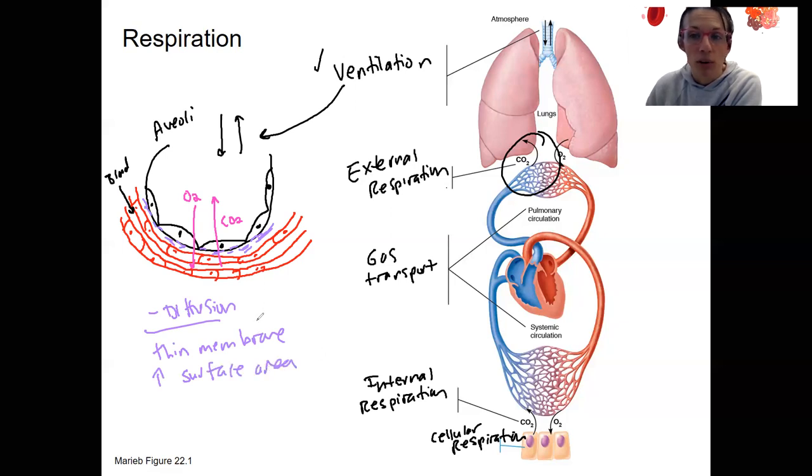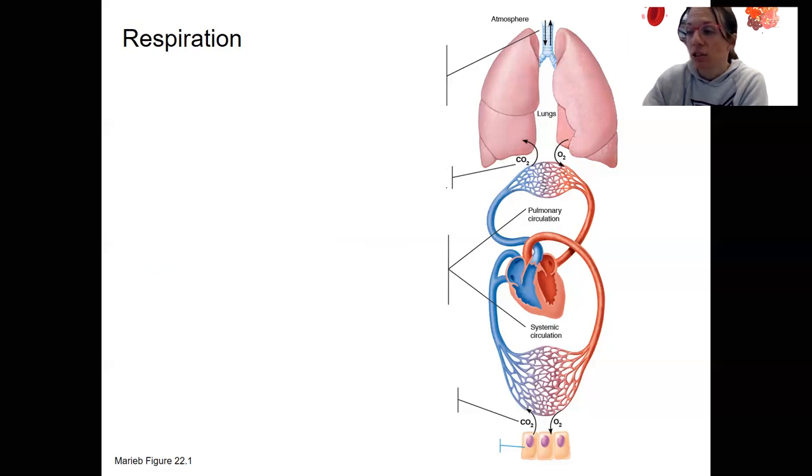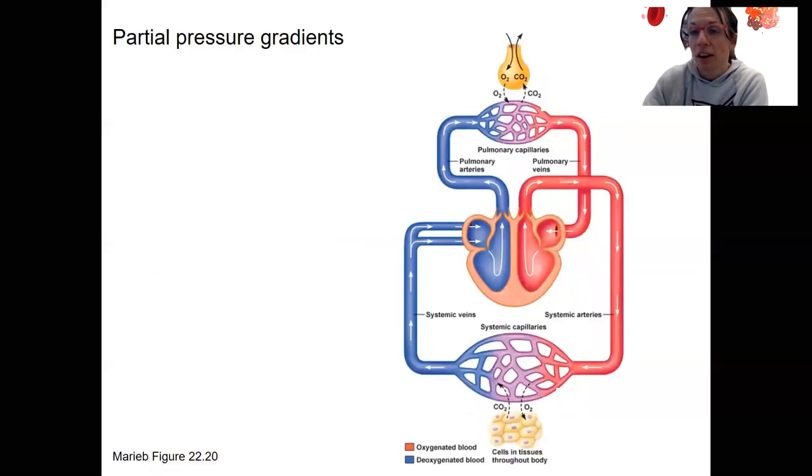And those are important in addition to the partial pressure gradients. Mostly review there. Let's look at the first step of this process. I want to look at partial pressure gradients. And right here, this is going to be atmosphere versus alveoli.